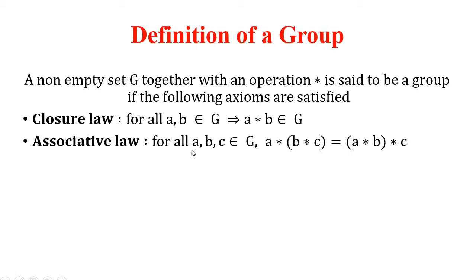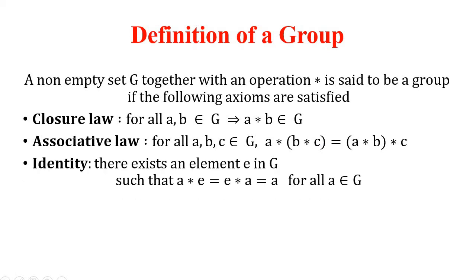Symbolically, the associative law is: for all a, b, c in G, a star (b star c) equals (a star b) star c. The third property is identity: there exists an element e in G such that a star e equals e star a equals a, for all a in G. For example, 0 is the identity element with respect to addition — adding 0 to any number gives the same number. With respect to multiplication, 1 is the identity element — multiplying any number by 1 gives the same number.